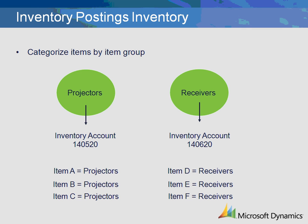For example, let's say you need to post your inventory receipts to different General Ledger accounts based on different categories or groups of items — receivers versus projectors. To accomplish this easily, you must have item groups that will allow you to group your items into these two categories. You can then set up your inventory receiving transactions to post to the correct Ledger accounts based on the item group rather than having to map each individual item.